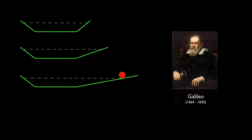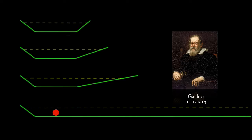If the final ramp were flat, in that case, the ball would never lose speed. Or rather, it would maintain its speed, but for how long?